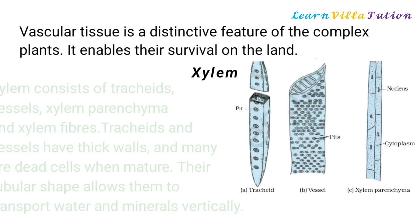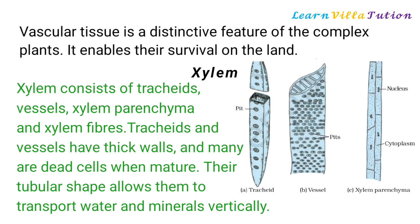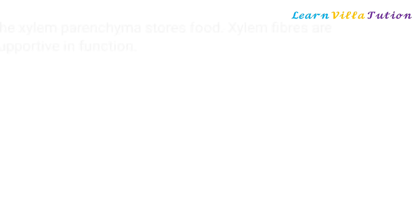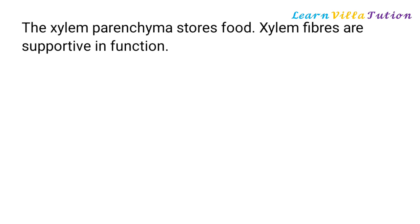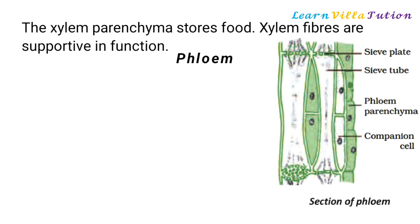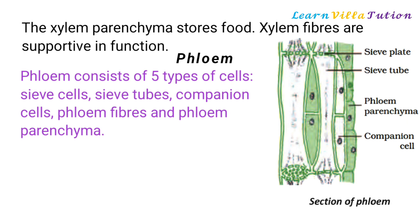Xylem consists of tracheids, vessels, xylem parenchyma, and xylem fibers. Tracheids and vessels have thick walls and many are dead cells when mature. Their tubular shape allows them to transport water and minerals vertically. Xylem parenchyma stores food, and xylem fibers are supportive in function.